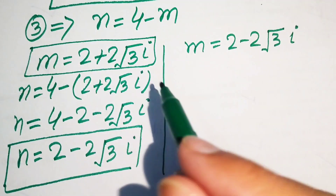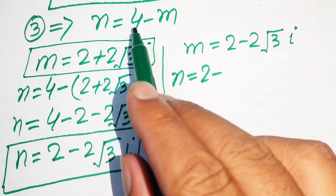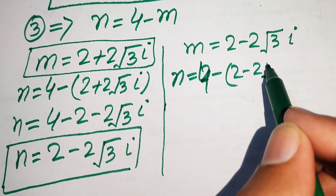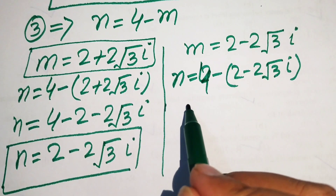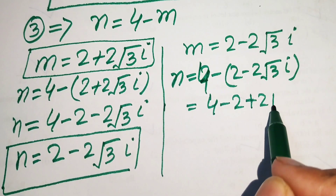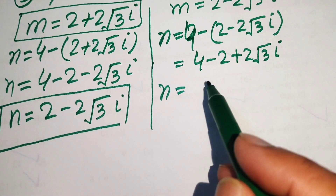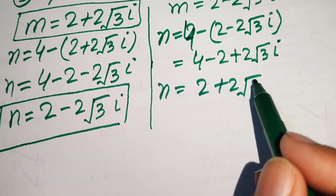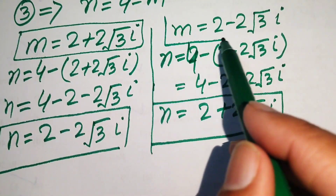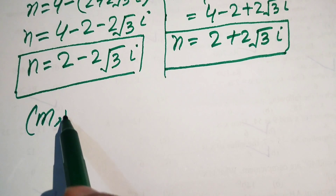Now substituting the second value of m: n equals 4 minus (2 minus 2 square root of 3 iota). Multiplying the minus sign through gives minus 2 plus 2 square root of 3 iota, so n equals 2 plus 2 square root of 3 iota. This is n corresponding to the second value of m.